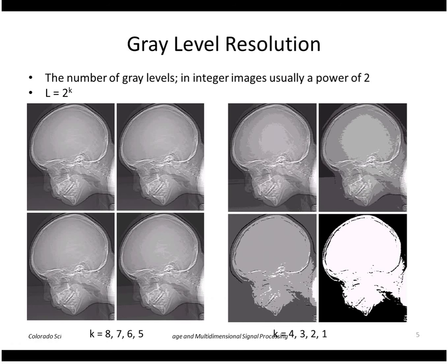The other type of quantization that occurs is in gray levels. Digital images are stored in binary form with k bits per pixel, meaning we have 2 to the k possible gray levels per pixel. Often that is 8 bits per pixel, meaning we have 0 to 255 levels in our image.